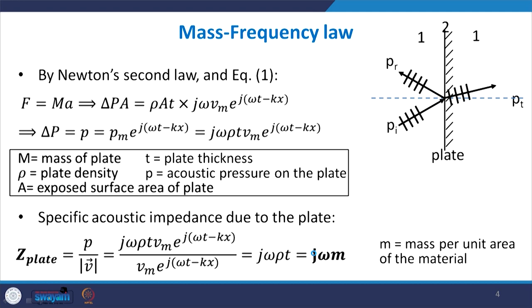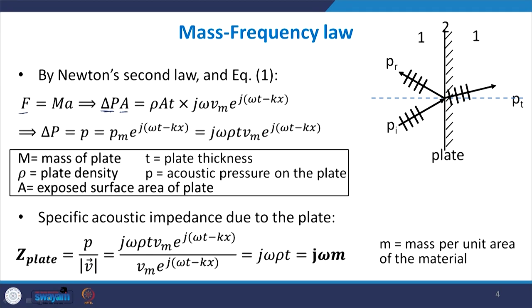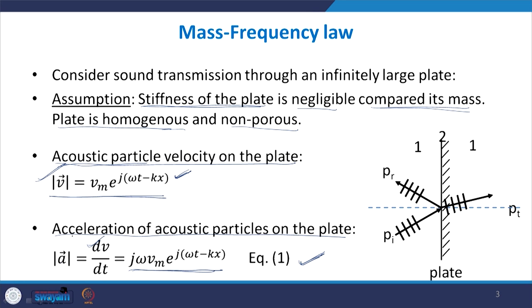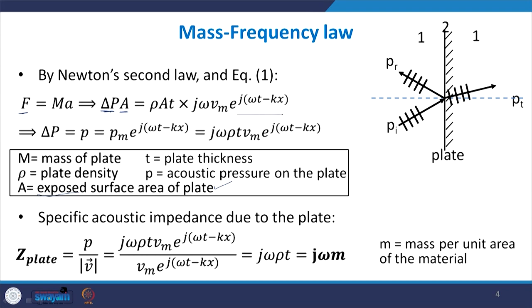By Newton's second law, force equals mass times acceleration. Applying this to the plate, the force can be given as the net pressure acting on the plate times the area. If pressure p₁ acts on one side and p₂ on the other, the resultant pressure is p₁ − p₂. We represent this force as Δp·A, where A is the exposed surface area of the plate, and mass times acceleration uses the acceleration expression derived earlier.